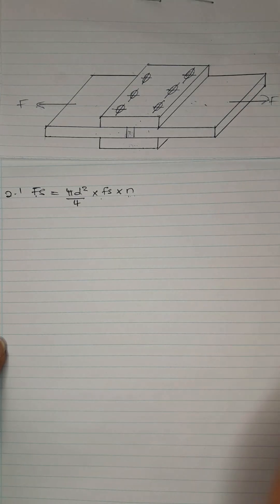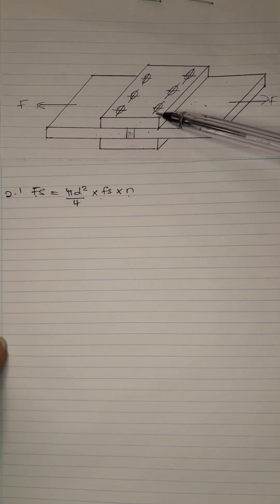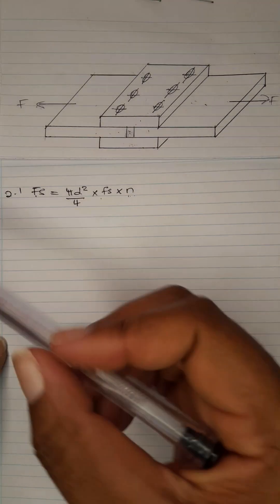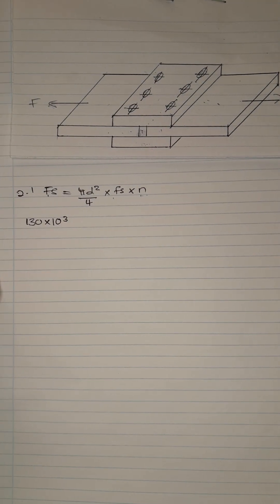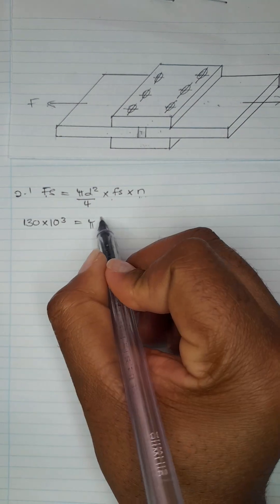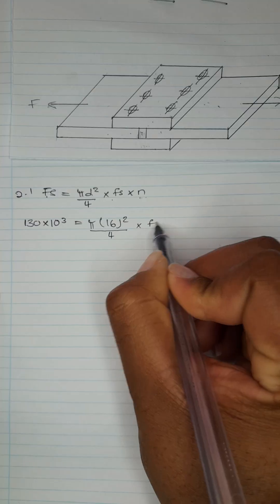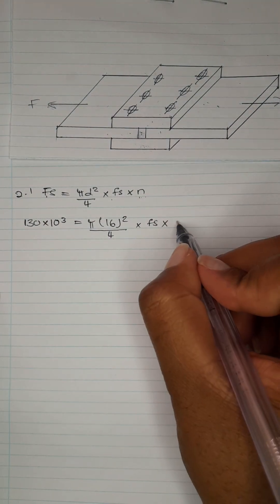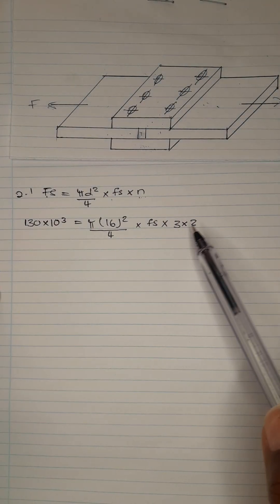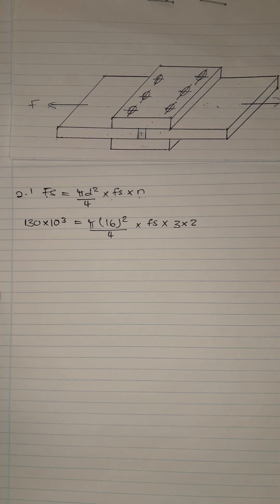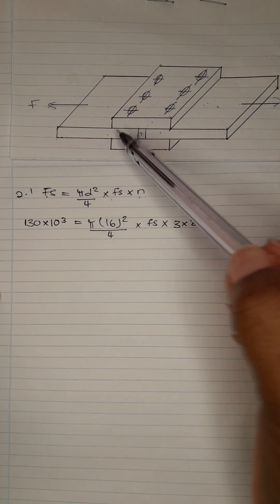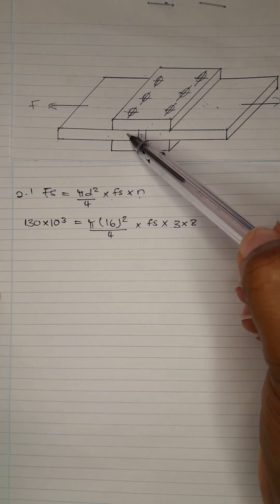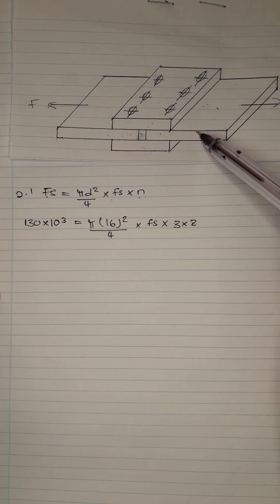The reason it is 3 × 2 instead of just 6 is because we have 2 tie bars, and on each tie bar we have 3 bolts. So we count 3 bolts per tie bar times 2 tie bars, giving us 6 bolts total. So: 130 × 10³ = (π × 16²/4) × shear stress × (3 × 2).